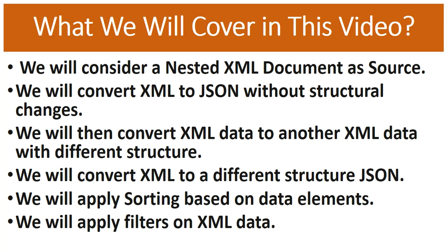We will do different types of approaches. First, we will convert XML data into JSON without changing any of the elements — that is, the exact same XML converted into its corresponding JSON. Then we will see how we can convert from XML to another type of XML where we will be doing some manipulations to the elements. We will further go with XML to JSON transformation with a different structure, and also see how we can perform different types of ordering and sorting based on elements in the XML.